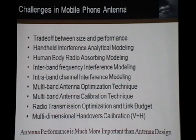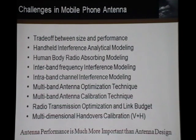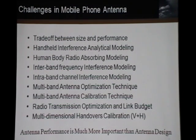Generally, we need radio transmission optimization and link budget. Users care about the general performance between a device and a base station — they care about whether it's connected or not. They don't care about how the antenna works. So eventually we need the overall optimization between a device and a base station, which we call radio transmission optimization and link budget. Link budget spans across all mobile devices to the base station.